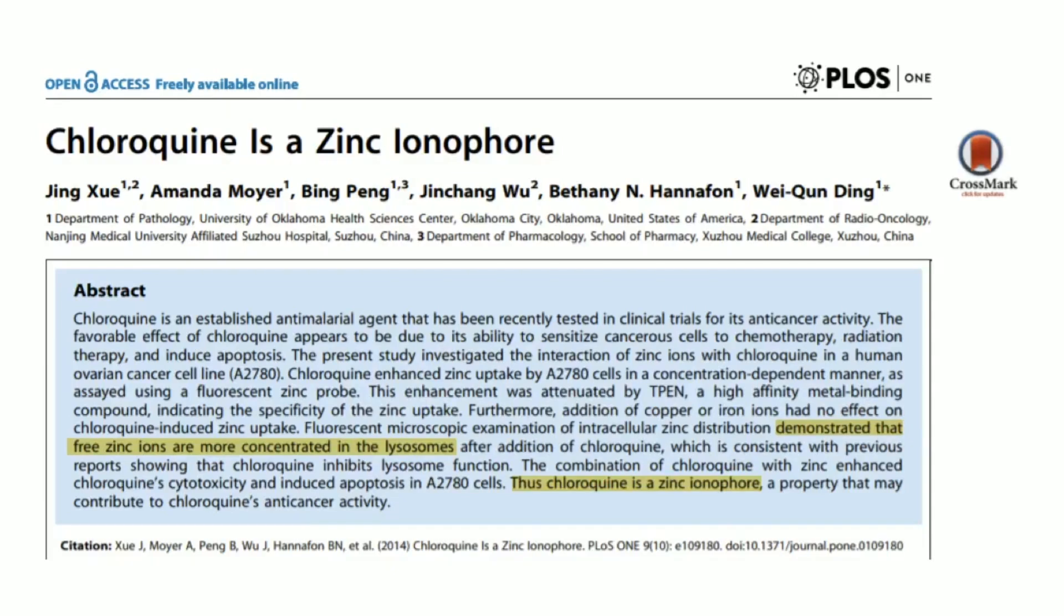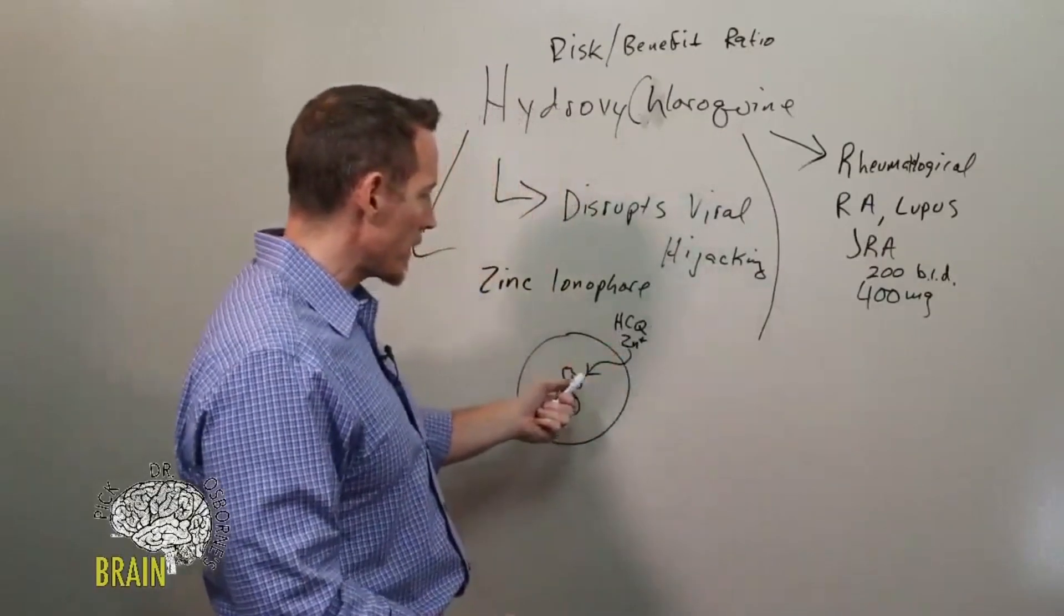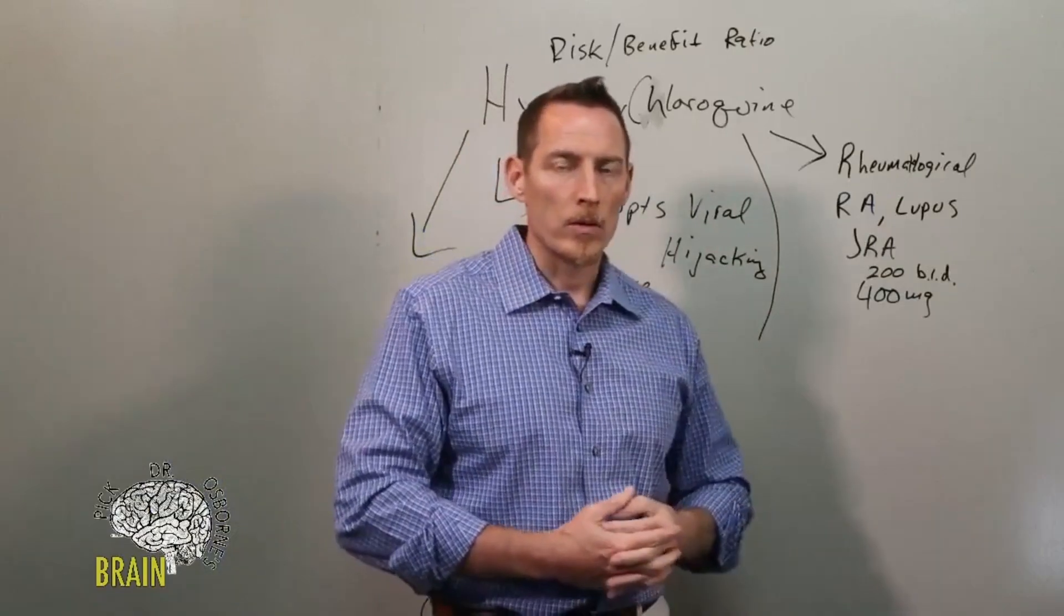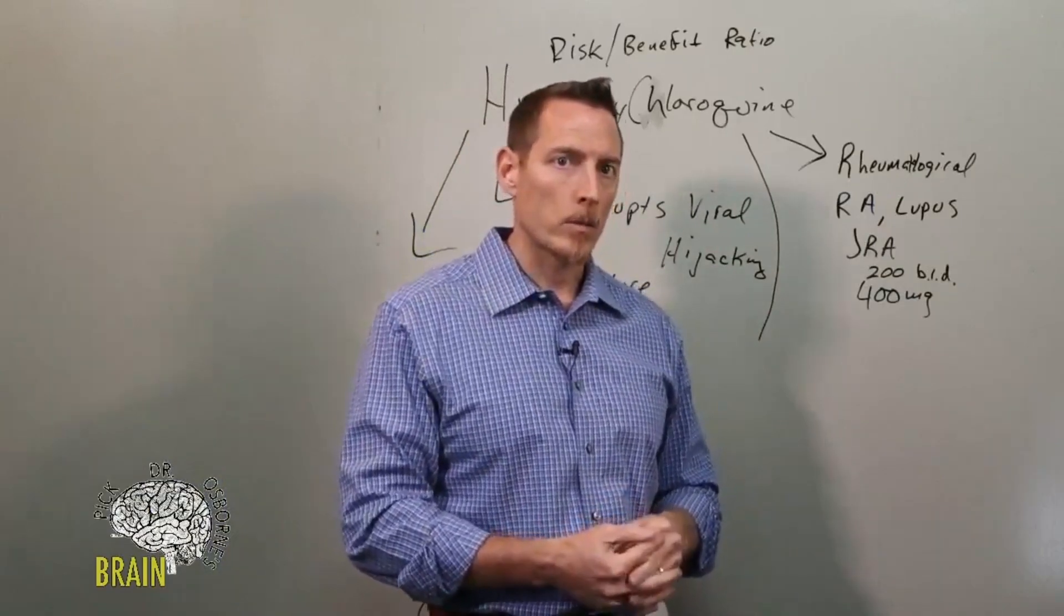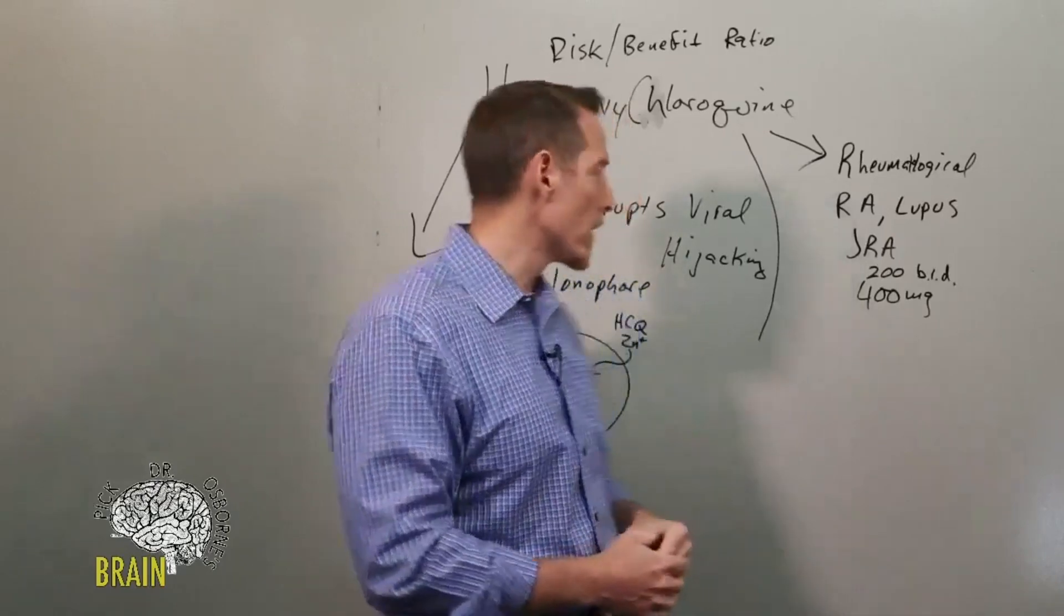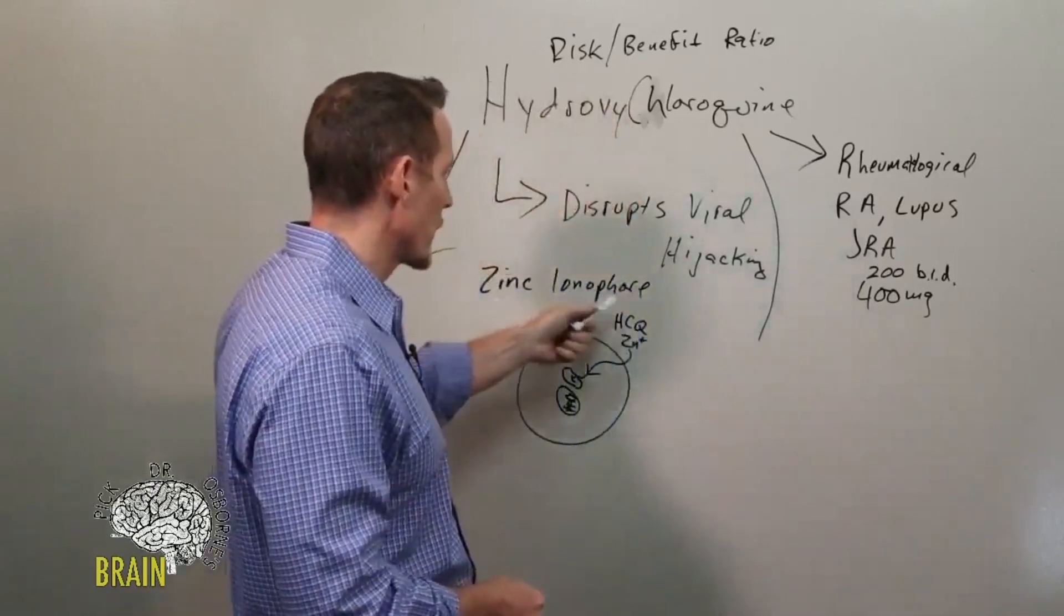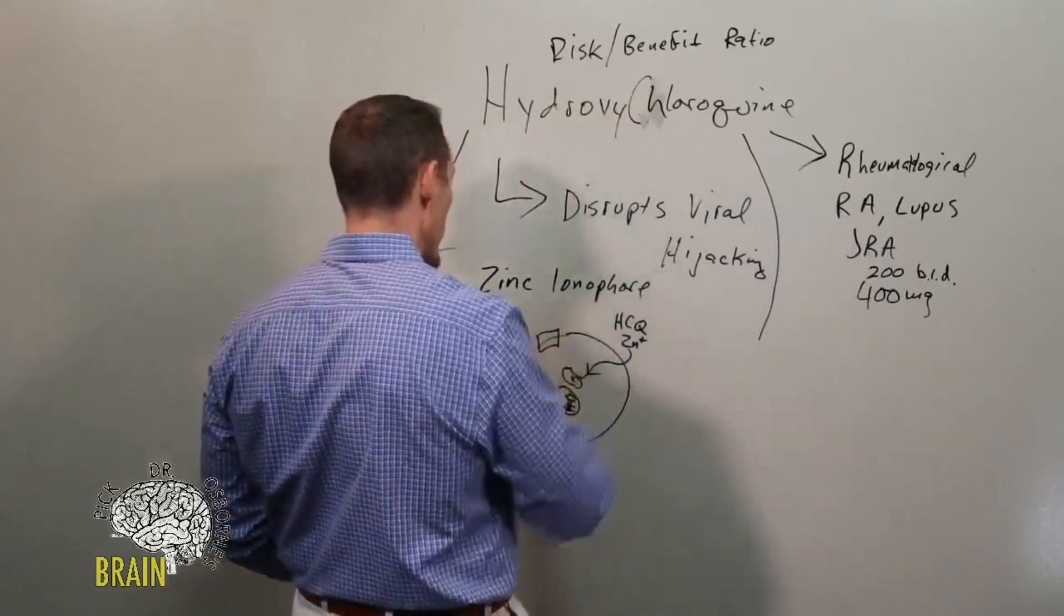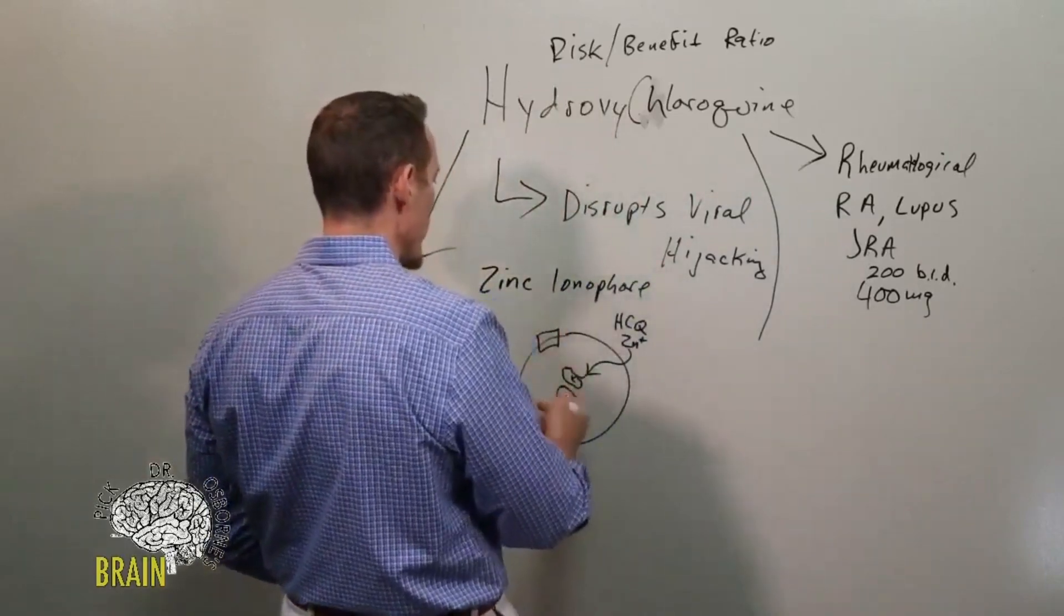zinc into those compartments in the cell where DNA and RNA replication can occur, which is where generally the virus likes to get to so that it can take over. As an ionophore, it pulls zinc into the cell. Generally speaking, there are receptors on the surface of the cell and receptors on the surface of the organelles in the cell that are zinc dependent. The zinc passes through these receptors.